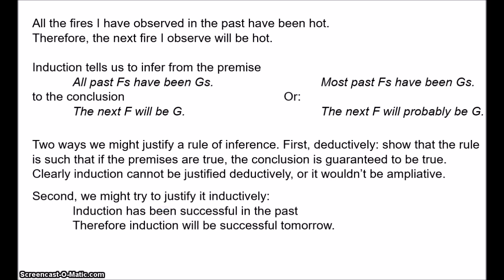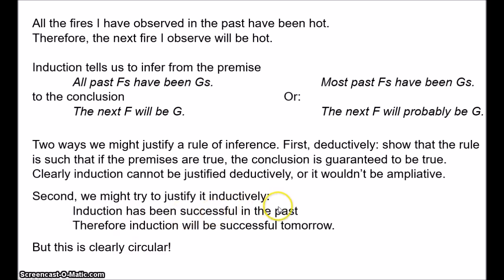The only other option is to justify induction inductively. We might say induction has worked in the past, so we can expect that induction will work in the future. The problem is that this is obviously circular — it's question-begging; it assumes what is to be proved. It assumes that induction is reliable, and then tries to use induction to justify induction. So the argument 'induction has been successful in the past, therefore induction will be successful tomorrow' is clearly an instance of the rule 'most past F's have been G's, therefore the next F will probably be G.' But this is exactly what Hume has placed in question. Trying to justify inductive inference by appealing to inductive inference is clearly circular.